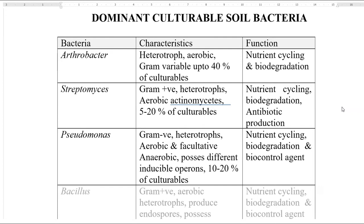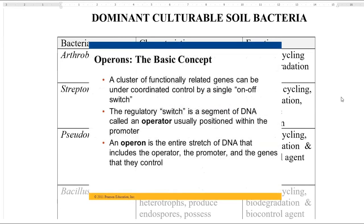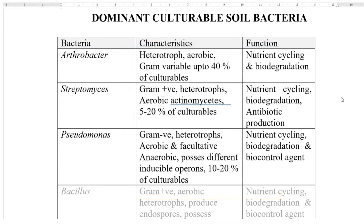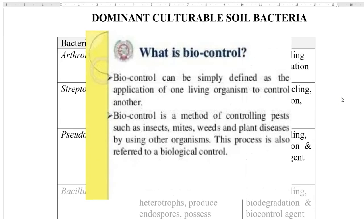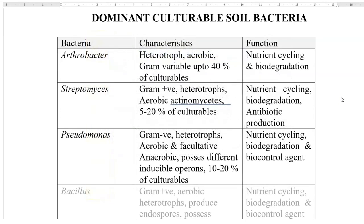The third dominant culturable organism is Pseudomonas — a gram negative, heterotrophic organism with aerobic and facultative metabolic features. They possess different inducible operons that give them the ability to degrade different kinds of substrates in the soil system. They constitute 10 to 20% of the culturable portions of the soil. They are involved in nutrient cycling, biodegradation, and even biocontrol — that is, controlling certain pathogenic organisms associated with the plant system.